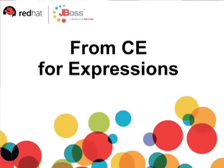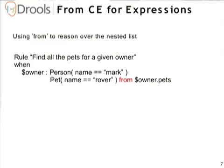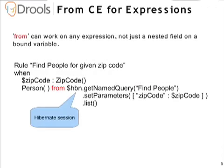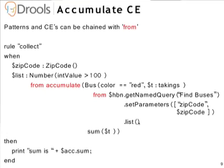In Drools you have a pattern which is a filter and the filter comes from the engine. But sometimes not everything lives in the engine, so we use the 'from' keyword to say something is from an expression, allowing you to iterate over a nested expression. You can also use a global variable — that could be a Hibernate session — so you can use a Hibernate query to return just the people needed for the data in your engine rather than loading everyone. We can combine this with the 'accumulate' keyword for aggregations, with nested and chained patterns.